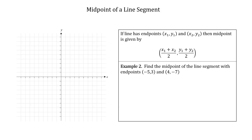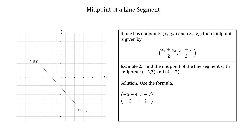One more example to show this works even with negative coordinates. Find the midpoint of the line segment with endpoints (−5, 3) and (4, −7). Using the formula, the x coordinate is (−5 + 4)/2 = −1/2, and the y coordinate is (3 + (−7))/2 = −4/2 = −2. Make sure every value keeps its correct sign.